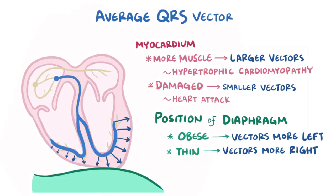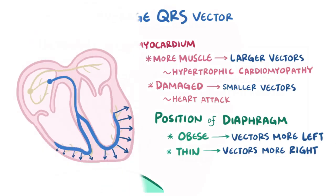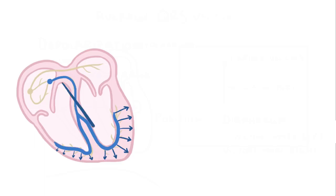When everything is taken into consideration, all of the individual vectors are added up, and then there's one overall representative vector arrow, which starts from the AV node and points in one direction through the ventricles.